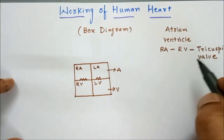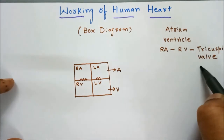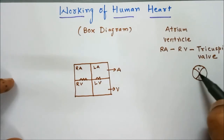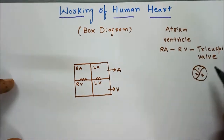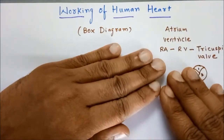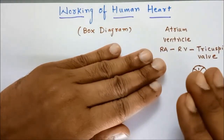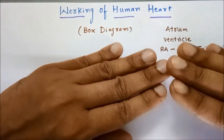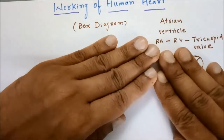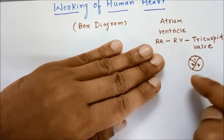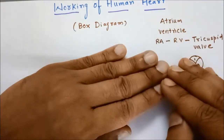The tricuspid valve is called tricuspid because it is made up of three cusps — three flaps. You can think of them as leaves opening together: one, two, and a third. All three open together like this. So it opens and it closes.